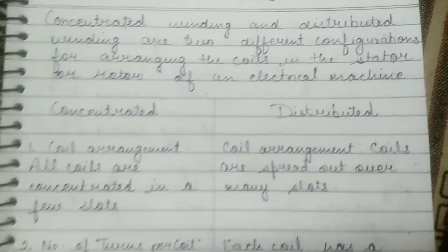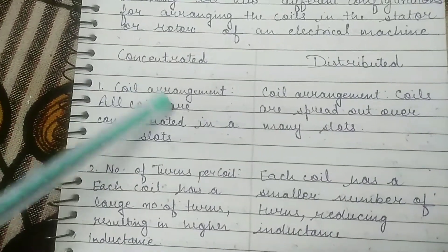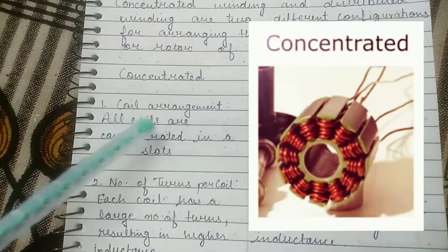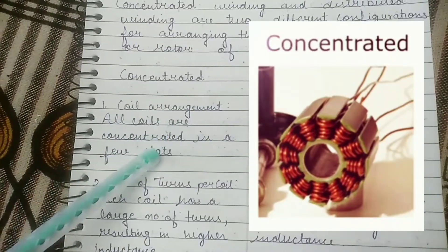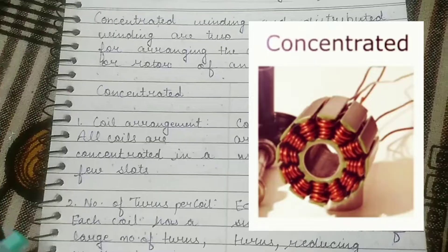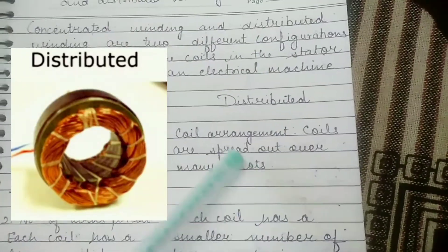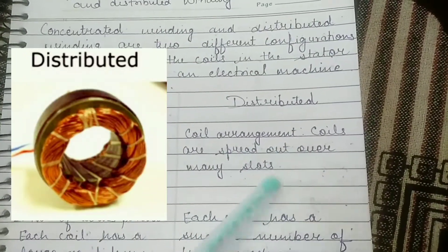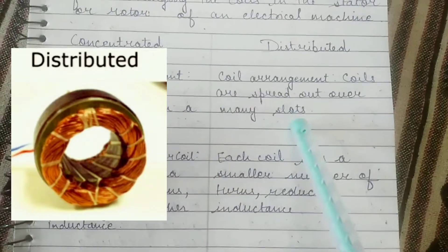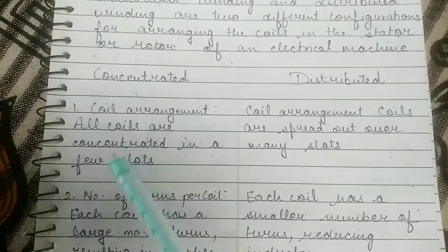The first difference is coil arrangement. In concentrated winding, all coils are concentrated in a few slots, leading to a simpler layout. But in distributed winding, coils are spread out over many slots, resulting in a more complex layout where coils are interconnected to form a distributed winding pattern.